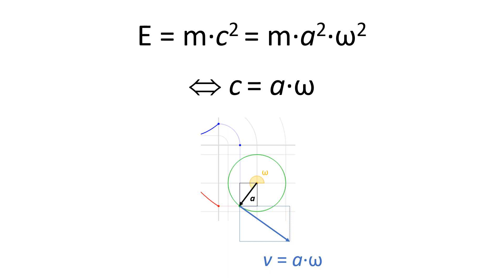So if we can somehow interpret the speed of light as some tangential velocity, then this weird equation makes sense. That's actually the whole Zitterbewegung model — it's all there. We're thinking of some point-like electric charge with no mechanical mass going round and round at the speed of light. That circular motion is the oscillation, and the equivalent mass of that energy is the rest mass of our electron. You'll probably need some time to digest that idea, but we need to move on.